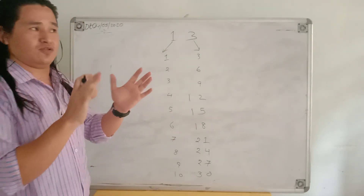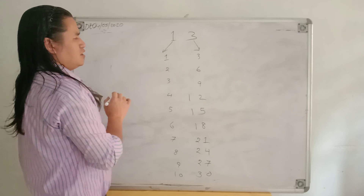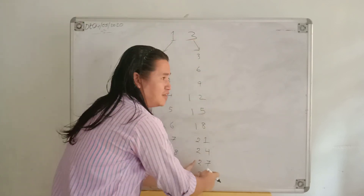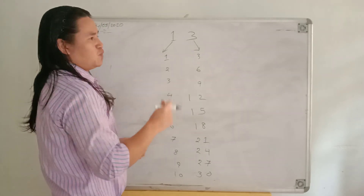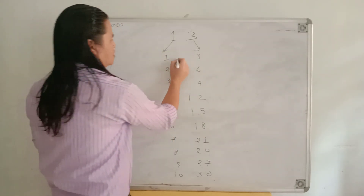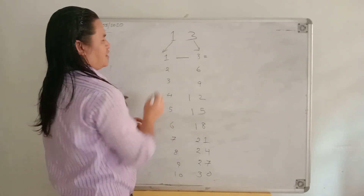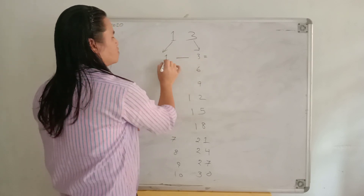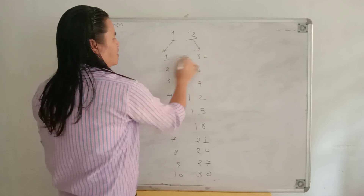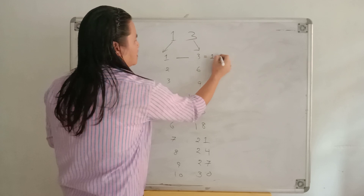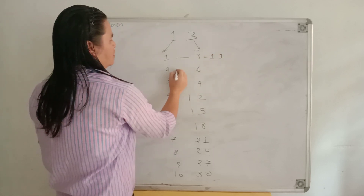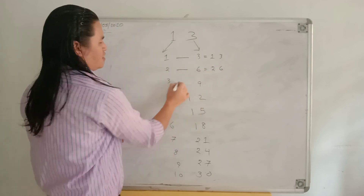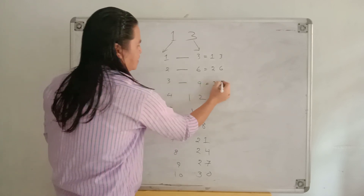Now, in the one-digit number method as I told you before — in one-digit number you will get only one-digit numbers on one side, and again only one-digit numbers on the right-hand side. So when there is only one digit, what we do is we will write the number as it is. Like, here is only one digit and here is only one digit — so after equals to, we write as it is: one, three; two, six; three, nine.